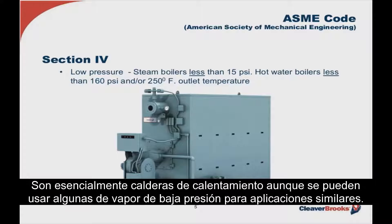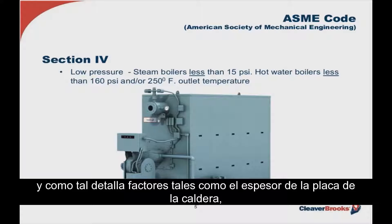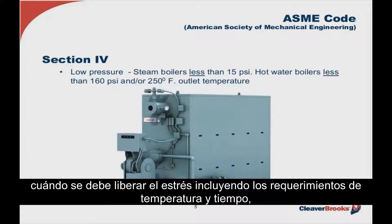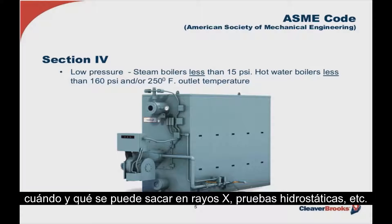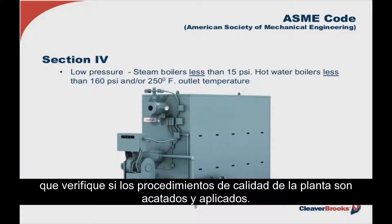Section 4 covers borders operating below 15 pounds and 250 degrees, and hot water boilers below 160 pounds hydrostatic pressure and 250 degrees. These are essentially heating boilers, though some low-pressure steamers can be used for light process applications. The ASME code is quite specific about construction, detailing boilerplate thickness, type of welding, full penetration welds, stress-relieving temperature and time, x-ray requirements, hydrostatic testing, and so on. It also requires an independent inspector in the plant at all times to witness all border construction.